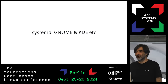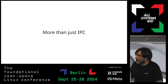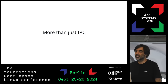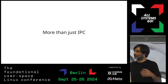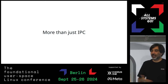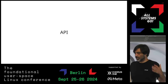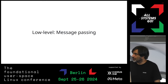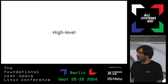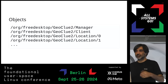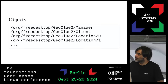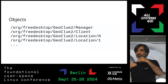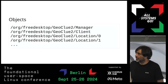DBus is used a lot in desktop and embedded systems — systemd, GNOME, KDE — and also on cloud. The cool thing is it's more than just IPC. Most IPC solutions just do message passing, where you send a message and encoding/decoding is up to you. DBus builds on that and defines an API layer: you have objects that you can split your API into, and these are dynamic — they don't need to be on a static path from the beginning; they can come and go.